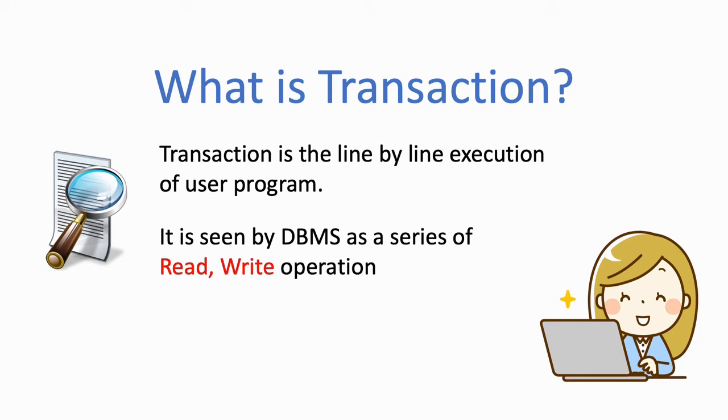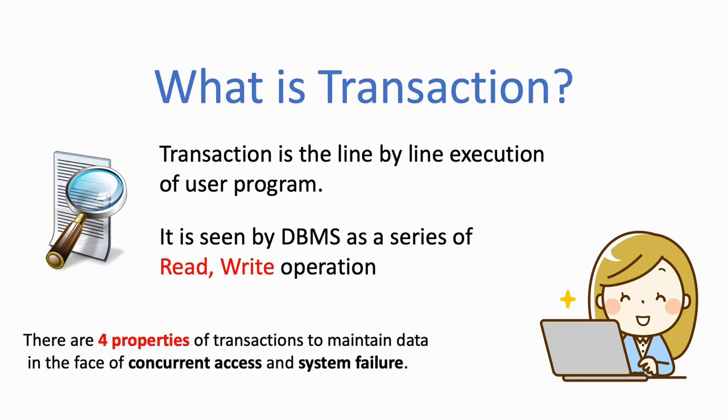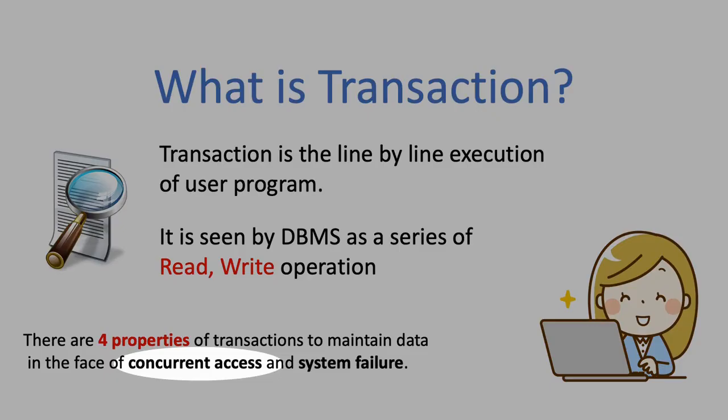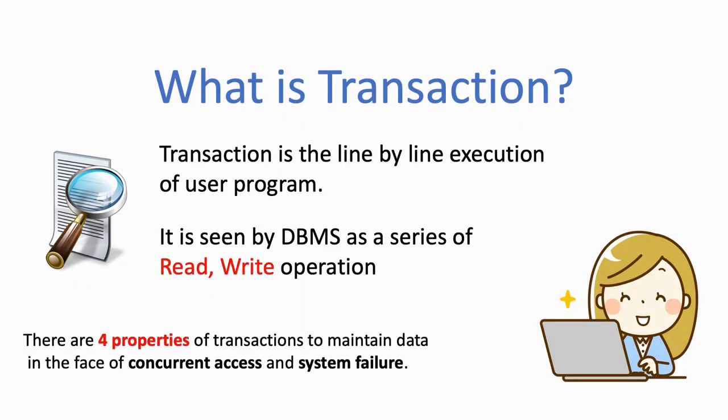There are four properties of transactions to maintain data in the face of concurrent access and system failure. Here concurrent access means the same data is accessed by multiple users to do read and write operations. Now let's see what those four properties are.